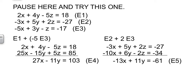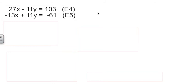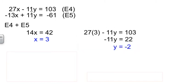As before, I've run out of room on the page. So I brought the two equations with me, E4 and E5. Well, if I look at E4 and E5, they're ready right now just to add together. So E4 plus E5, the 11Y's cancel out. 14X = 42, so X is 3. Well, now I can plug X is 3 into either one of these. I picked E4. 27 times 3 is 81. Subtract the 81 over. You get 22. Divided by -11 is -2.